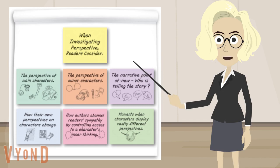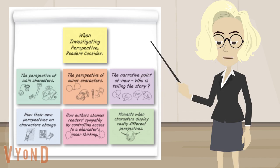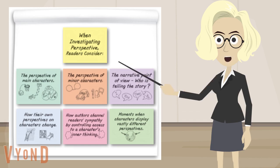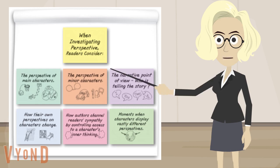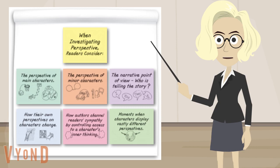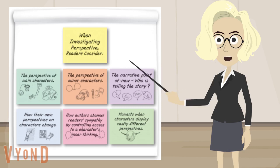You will probably draw on all the work you did in the last bend — figuring out who is telling the story, what kind of character this is, and thinking about what shapes that character's perspective. You will use this anchor chart as a reminder. Think about what work you've already been doing, even at the beginning of your book.